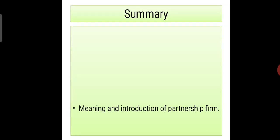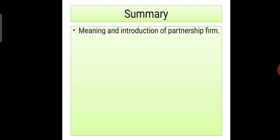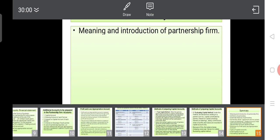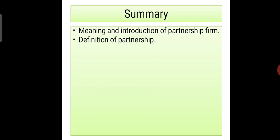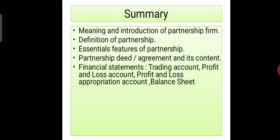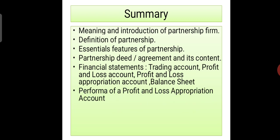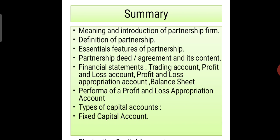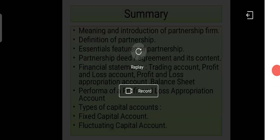Summary: In this video we learnt about partnership accounts — meaning and introduction of partnership firm, definition of partnership, essential features of partnership, partnership deal and agreement and its contents, financial statements including trading account, profit and loss account, profit and loss appropriation account and balance sheet, the proforma of profit and loss appropriation account, and types of capital accounts — fixed capital accounts and fluctuating capital accounts.